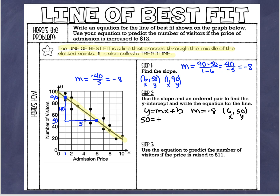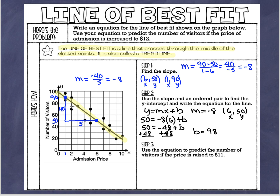So: 50 equals negative 8 times 6 plus b. Negative 8 times positive 6 is negative 48. So 50 equals negative 48 plus b. To solve, I add 48 to each side: 50 plus 48 gives me b equals 98. That makes perfect sense — if I look at my graph, my y-intercept is all the way up here, which looks like about 98, just a little under 100. So our equation is y equals negative 8x plus 98.